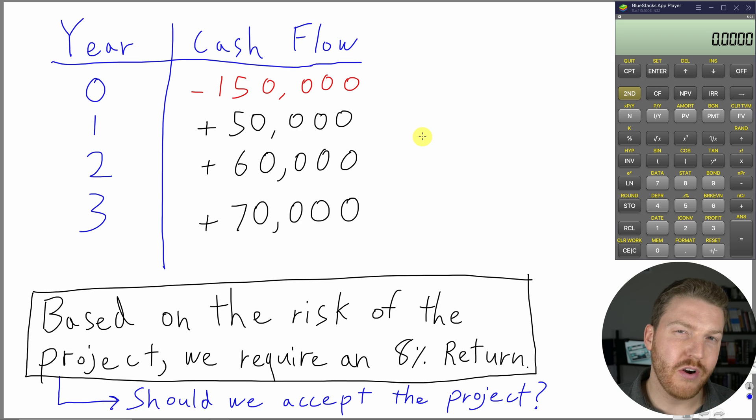We have done our analysis and determined that this coffee shop will cost us $150,000 of a cash outflow to start today or year one. For the next three years, it will generate a $50,000 positive cash inflow at the end of year one, $60,000 at the end of year two, and $70,000 at the end of year three.